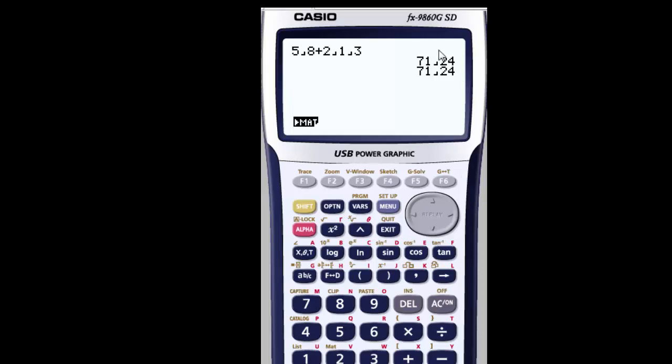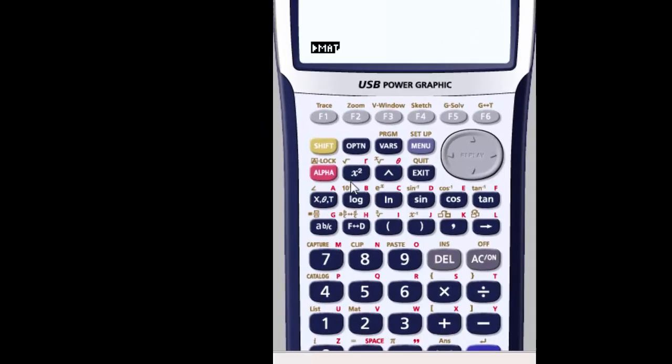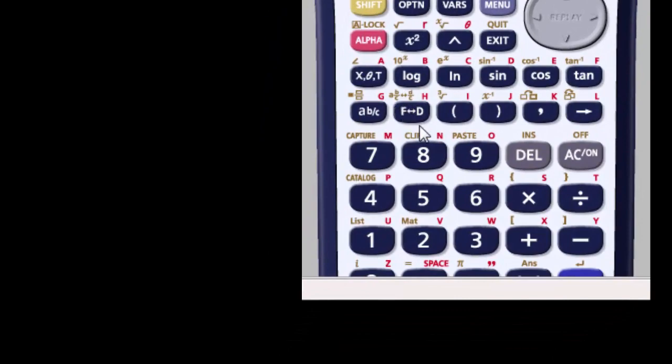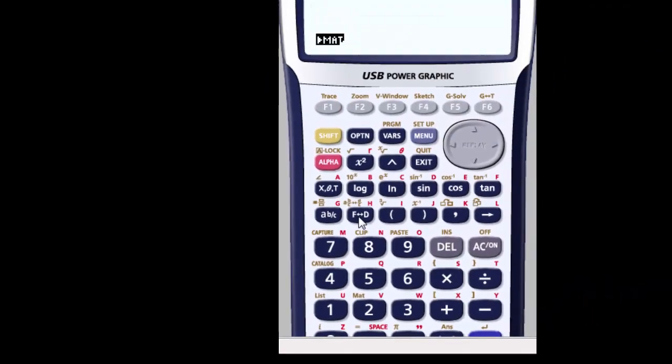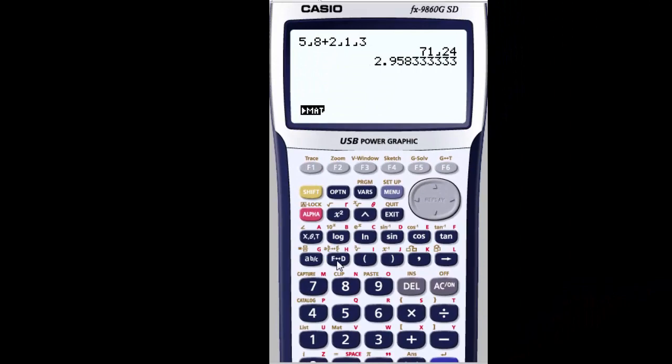Now let's say that we don't want 71 24ths, but we need it in decimal form. You have a key here that's F to D, so it changes a fraction to a decimal or a decimal to the fraction. Hit it once, and you'll see that it changed it to a decimal form.